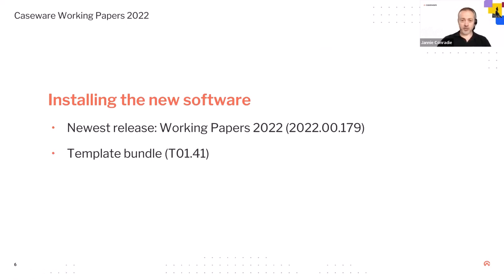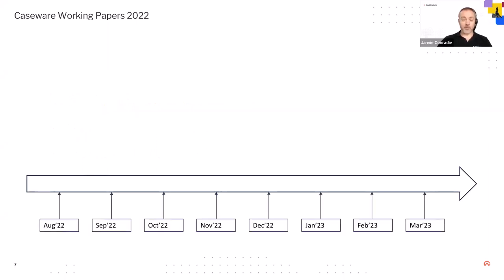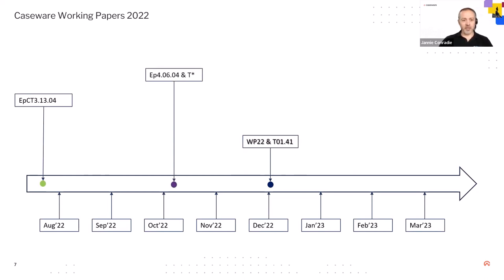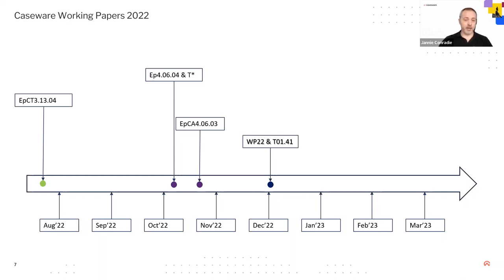The new release for Working Papers was Working Papers 2022.00.179, and we've also released the template bundle with that, which is Tier 141. Looking at the timeline: we released Working Papers beginning of December; our last tax ePAC was before August; our last corporate ePAC for corporate clients and IFRS was 40604 at the beginning of October; and the charity and academy ePAC 40603 was mid-October. You'll see a 'T' next to 40604 because we've released a T-Pack with the ePAC. A T-Pack is released when we have new mapping codes for a particular template — you need to install the T-Pack with the ePAC, otherwise you won't get all the new disclosures.